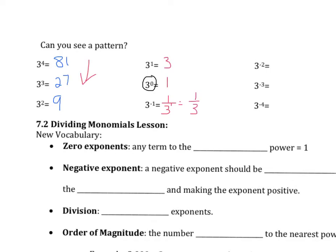We are going to do the same thing with 3 to the negative 2nd. We are going to take the reciprocal, 1 over 3, and make the exponent positive. 1 over 3 squared is 1 ninth. 1 over 3 to the 3rd gives us 1 over 27. Our final example gives us 1 over 3 to the 4th, which we said earlier was 81. As you can see, our numbers are still getting smaller because we are getting a larger fraction — a larger number on the bottom but our number on top stays the same.